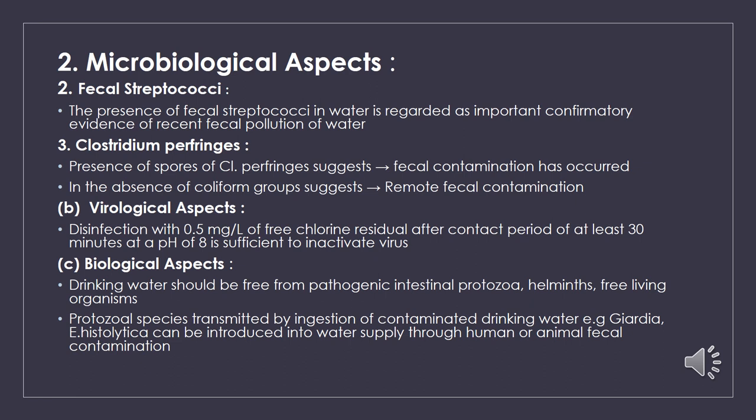Drinking water should be free from any viruses. Disinfection with 0.5 mg per liter of free chlorine residual after a contact period of at least 30 minutes at pH 8 is sufficient to inactivate viruses. Drinking water should also be free from pathogenic intestinal protozoa, which include helminths, Giardia, and free-living organisms. Some protozoan species are transmitted by ingestion of contaminated drinking water, including Giardia, Entamoeba histolytica, which can be introduced into the water supply through human or animal fecal contamination.